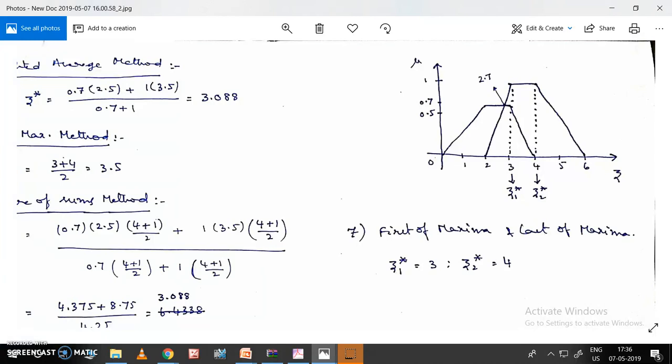Coming to first of maxima and last of maxima: the maxima value is 1, the starting point is 3, and ending point is 4. So first of maxima is z1* = 3, and last of maxima is z2* = 4.